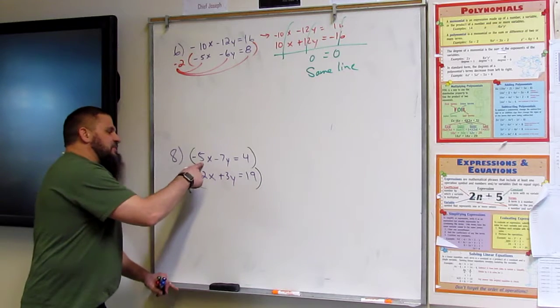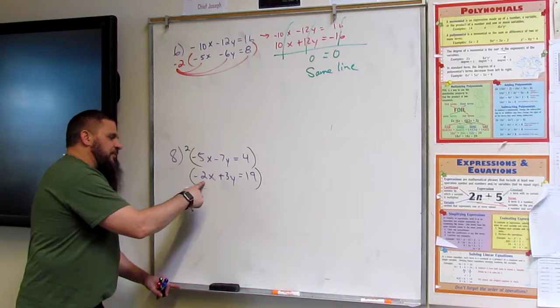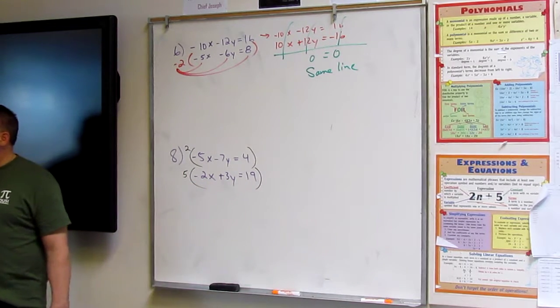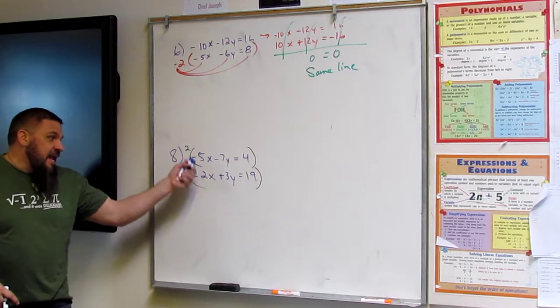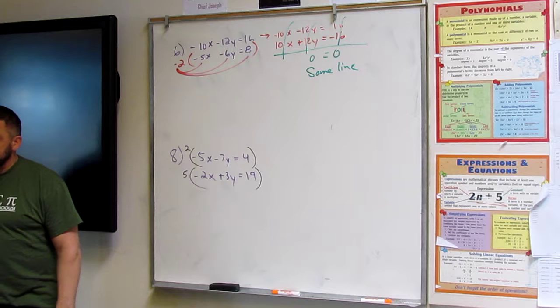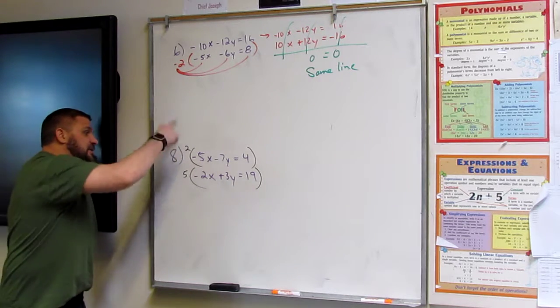So how do I make a five into a ten? Two. By two. How do I make a two into a five? By five. By five, right? All right. Now, but they are the same. So I need to make one of them opposite. Does that make sense? Yes. Okay. So one of them has to be negative. Which one? Top or bottom? Bottom.